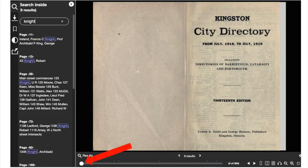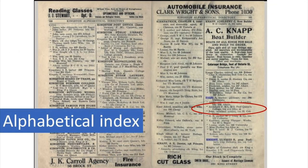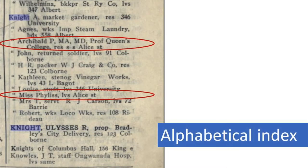Not every year of the city directory includes a street index, but there's always an alphabetical index. In this case our keyword search didn't give a result for the alphabetical index. However, we can browse the directory by dragging the white dot across the bottom of the screen. Two instances of the word Knight are highlighted on this page of the alphabetical index, but for Archibald's entry, ditto marks were used to represent his surname — that's why his name didn't turn up in our keyword search.